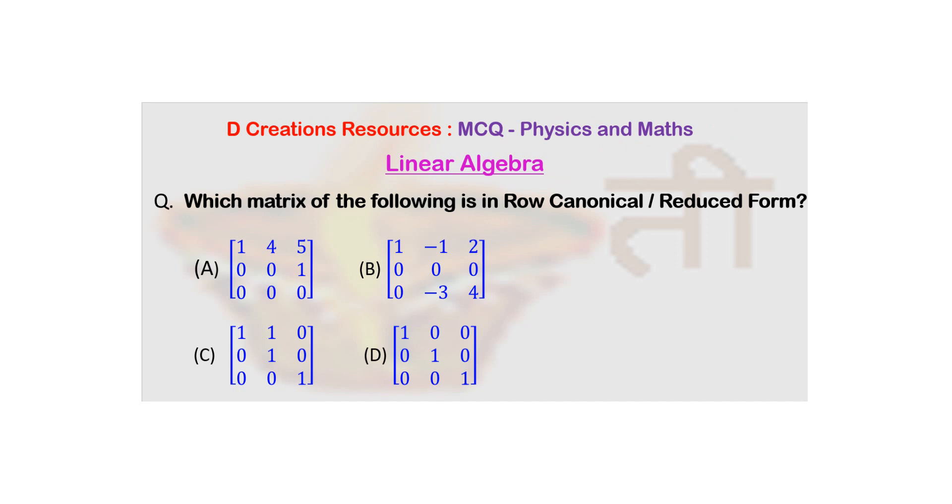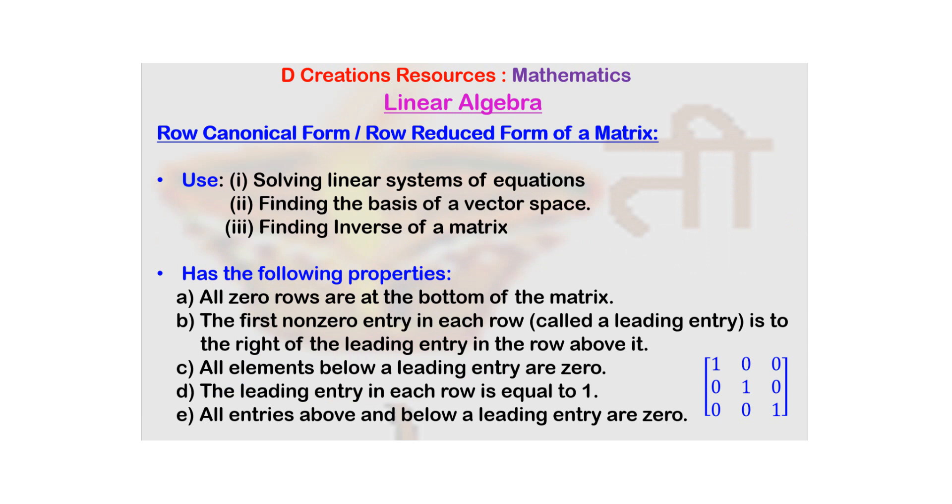The question is, which matrix of the following is in row canonical or reduced form? In order to solve this question, you can recall that in previous episodes we have looked in detail at the row canonical form and row reduced form for a matrix.